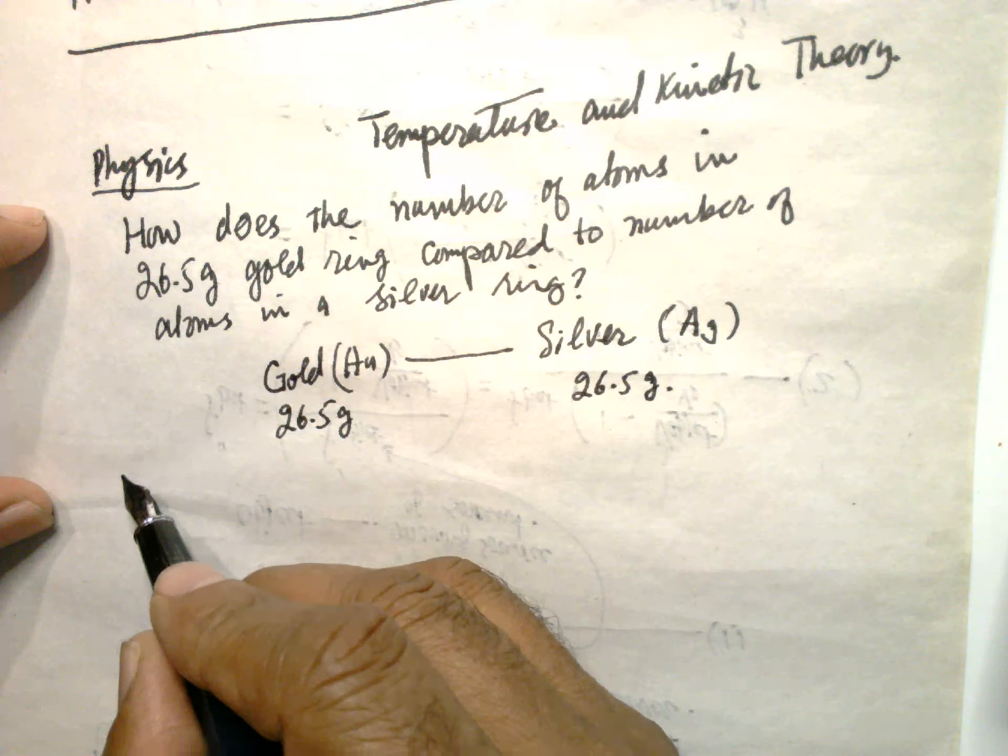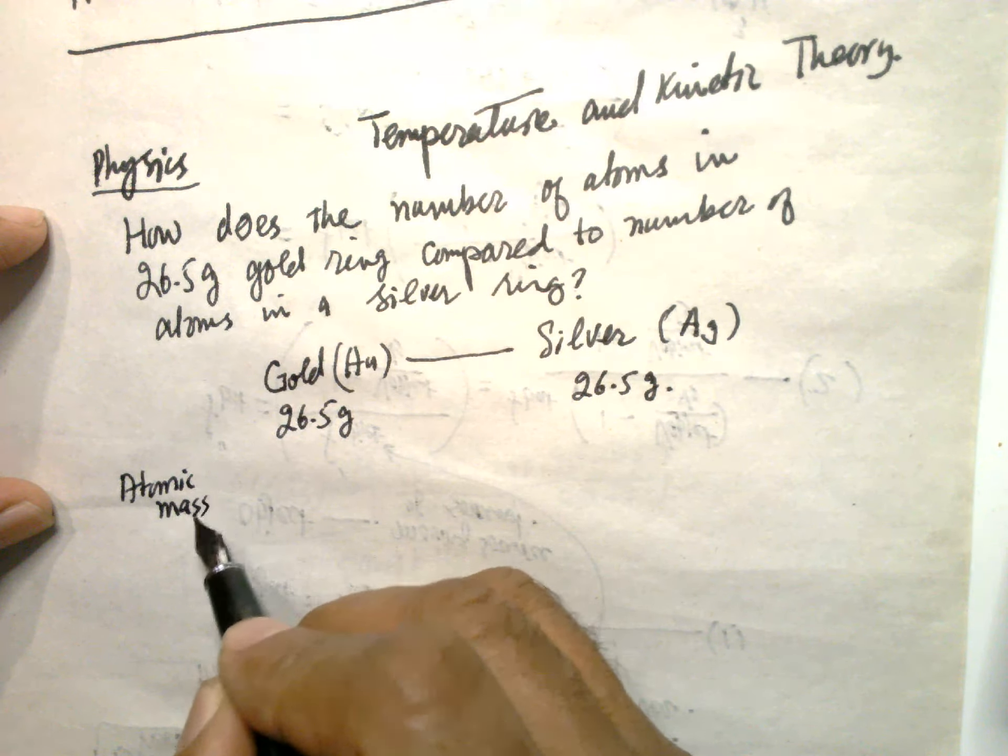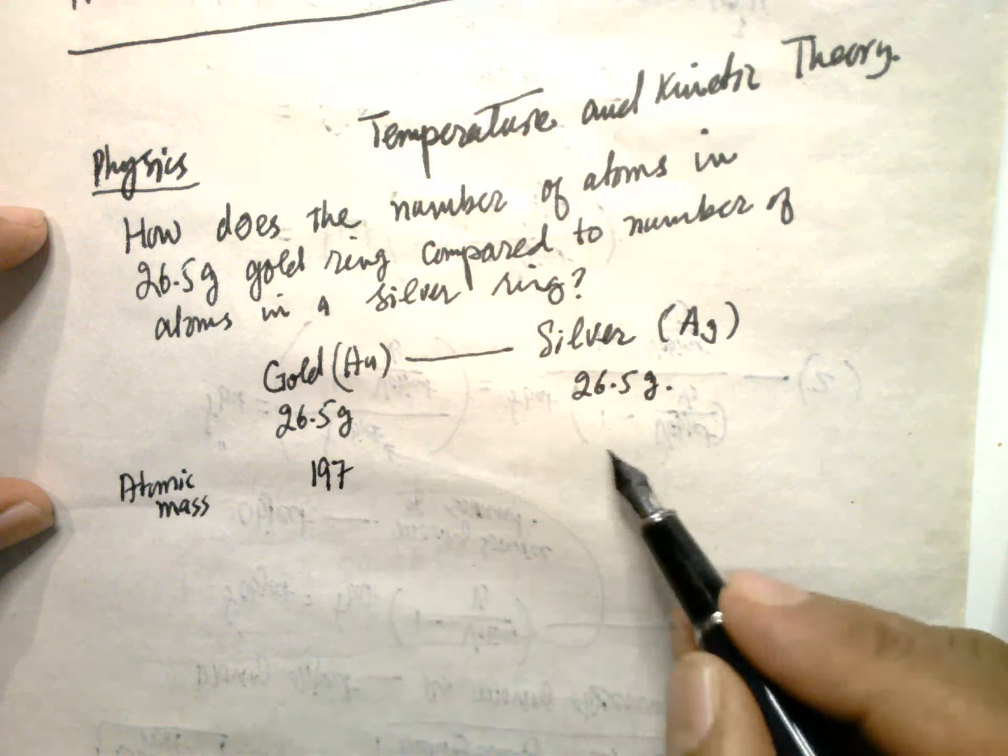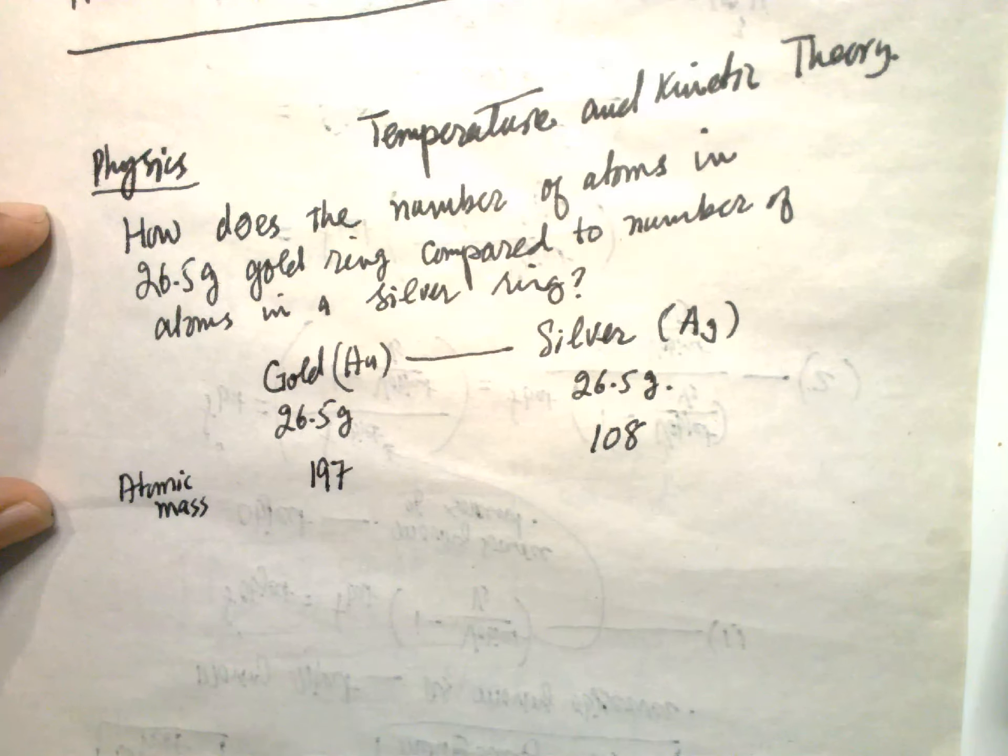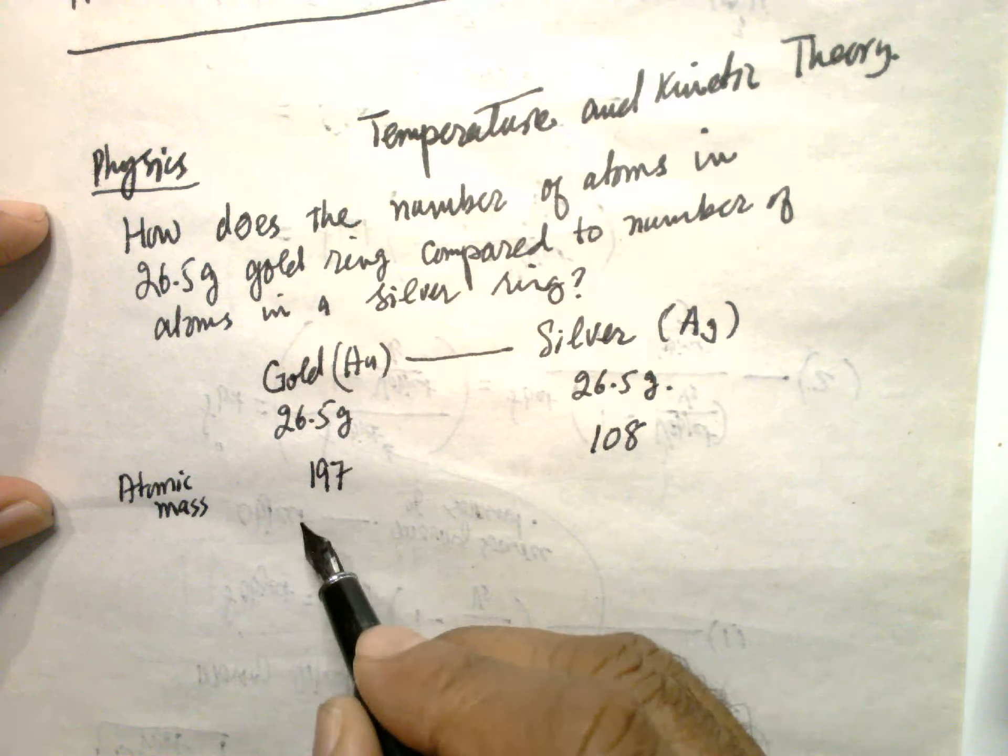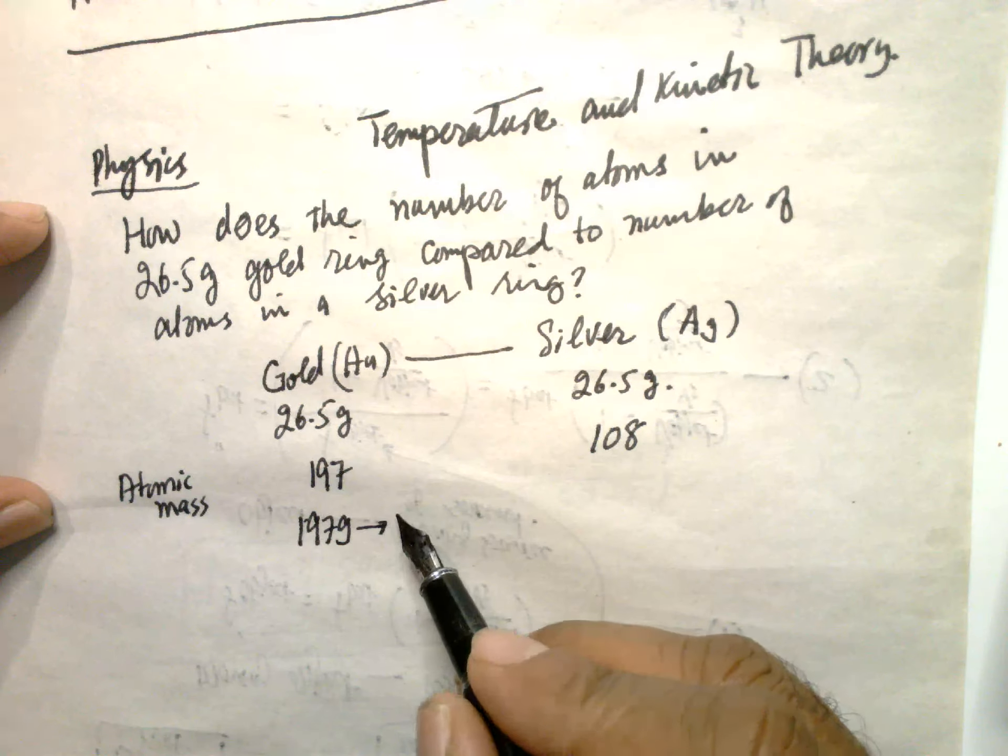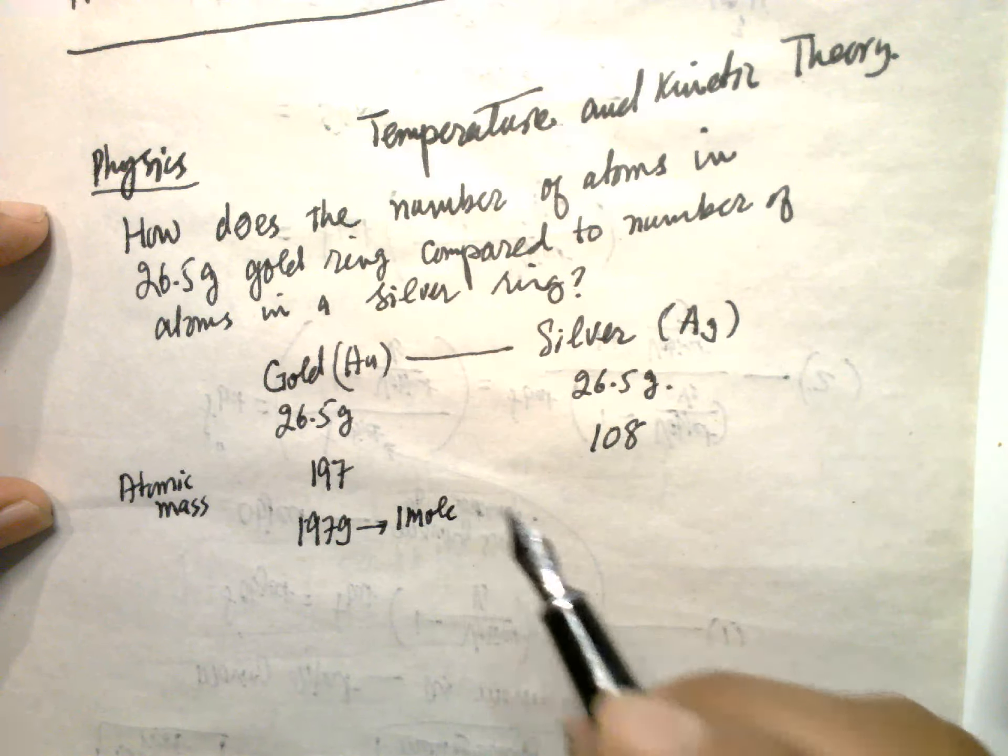Atomic mass is 197 and 108. So that means if we have 197 grams, this is one Avogadro number, so one mole.